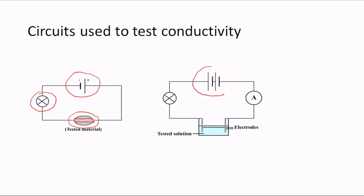In this second circuit we have a battery — remember a battery is more than one cell. The long line is the positive terminal and the short line is the negative terminal. We have a bulb, a solution to be tested, two electrodes dipped into the solution, and an ammeter to measure current. If the solution conducts electricity, we expect to get a reading on the ammeter.